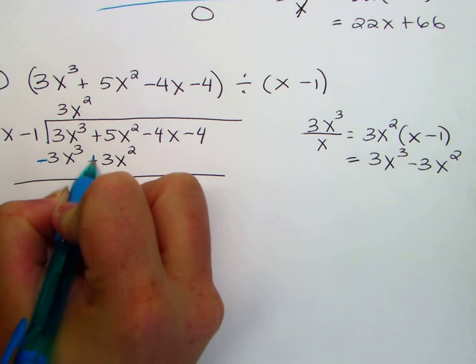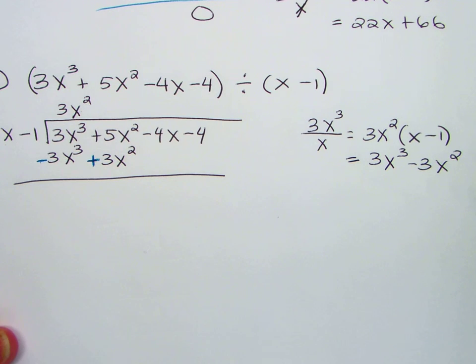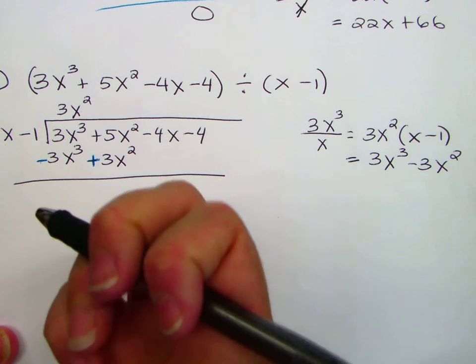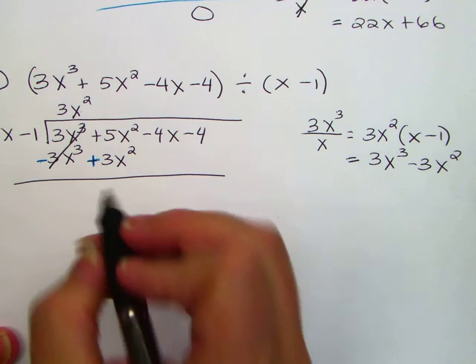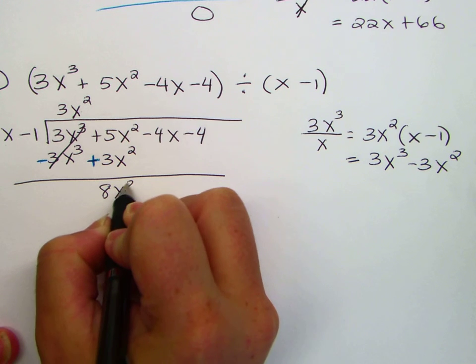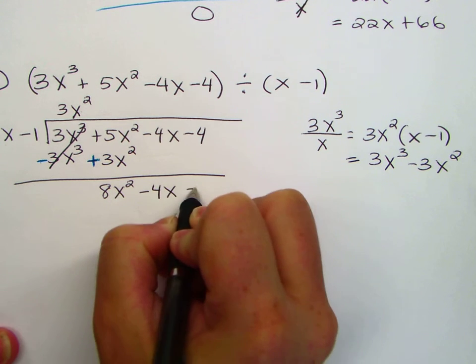Minus minus, now this is already minus, it becomes plus. Change the sign at the bottom. Now 3x to the third minus 3x to the third is zero, it cancels out. 8x squared minus 4x minus 4.